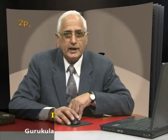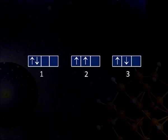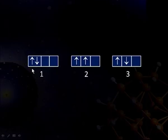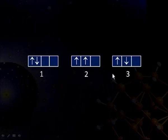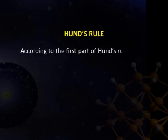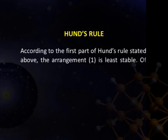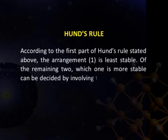For illustration, let us find out the most stable electronic arrangement of a 2P configuration. There are 15 ways of arranging 2 electrons in the 3 p orbitals. The arrangements include: opposite spins in the same orbital; parallel spins occupying two different orbitals; and opposite spins occupying different orbitals. According to the first part of Hund's rule, the first arrangement is least stable. Of the remaining two, the more stable can be decided by considering exchange energy.